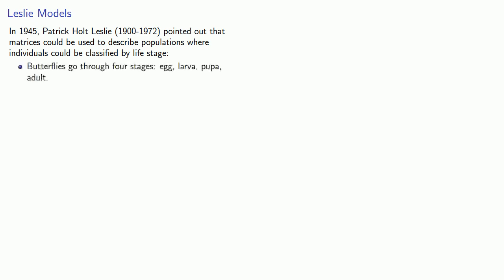For example, butterflies go through four stages: egg, larva, pupa, and adult. Humans go through several stages: infant, toddler, child, adolescent, adult.